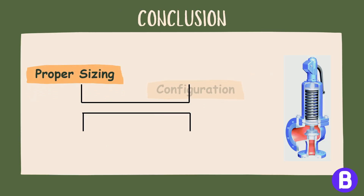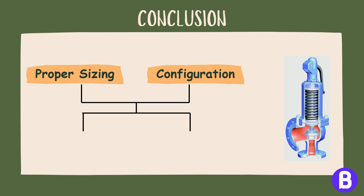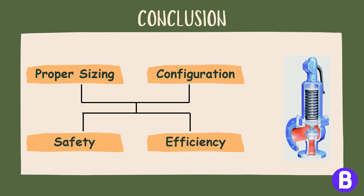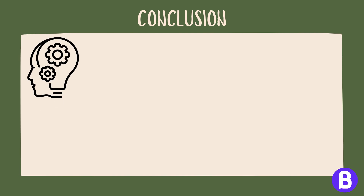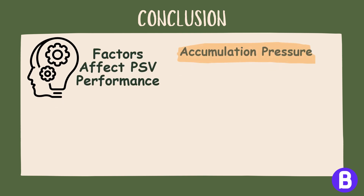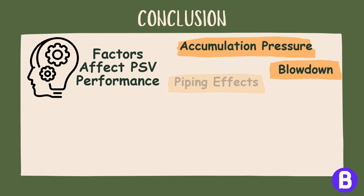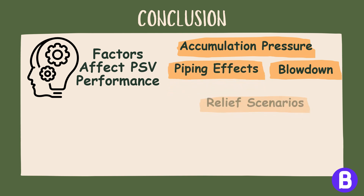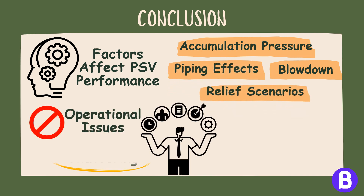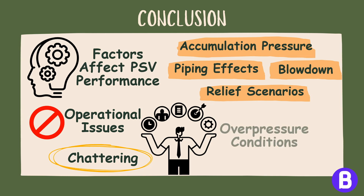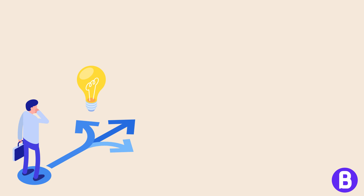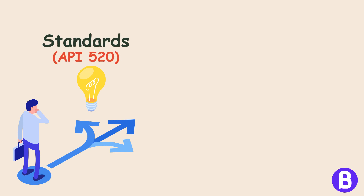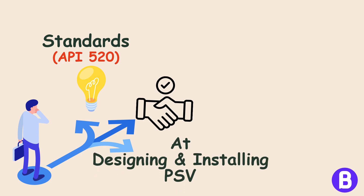In conclusion, the proper sizing and configuration of PSVs are paramount to the safety and efficiency of chemical process engineering systems. Understanding and managing the factors that affect PSV performance — such as accumulation pressure, blowdown, piping effects, and multiple relief scenarios — helps prevent operational issues like chattering and ensures that overpressure conditions are effectively mitigated. Always refer to appropriate standards such as API 520, and seek vendor input as needed when designing and installing PSVs.